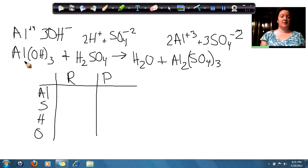So if we look at aluminum, right now this side aluminum only has one. But if we look at this side, our aluminum has two. So that means that we need to change the coefficient in front of the aluminum to a two. So then we have two aluminums.